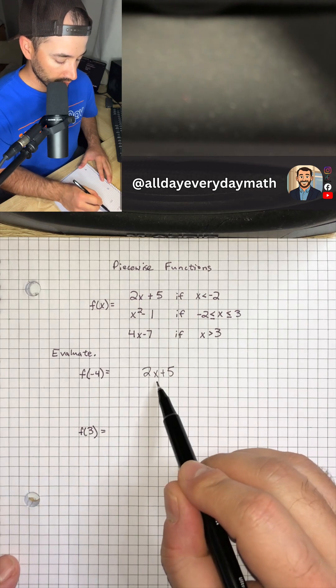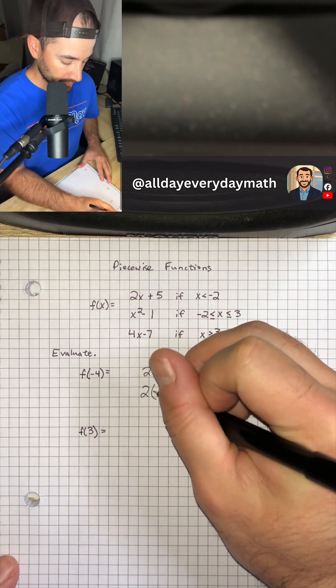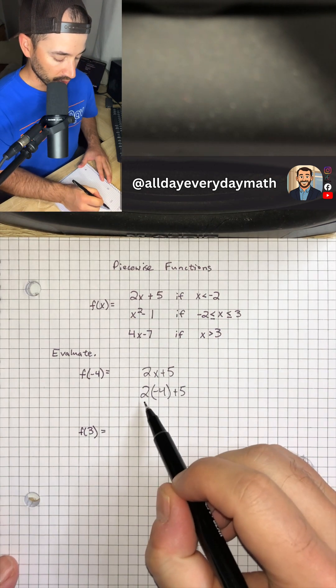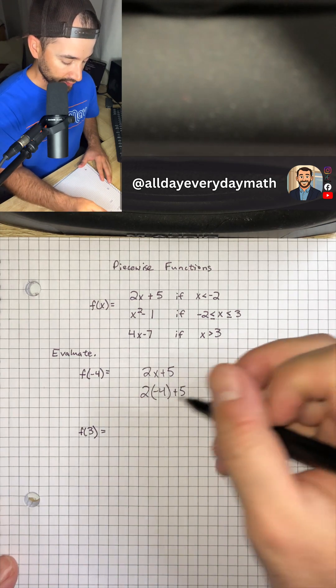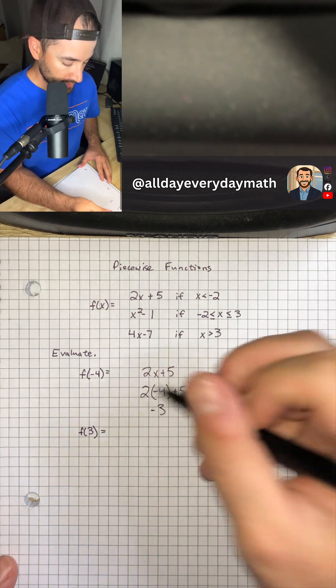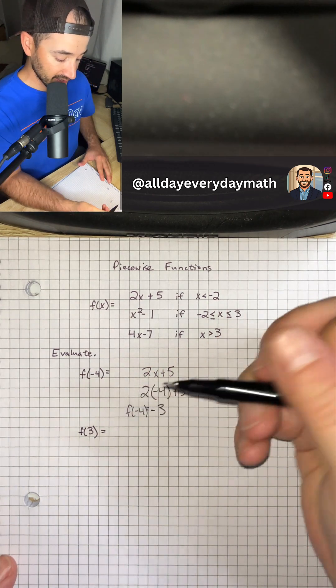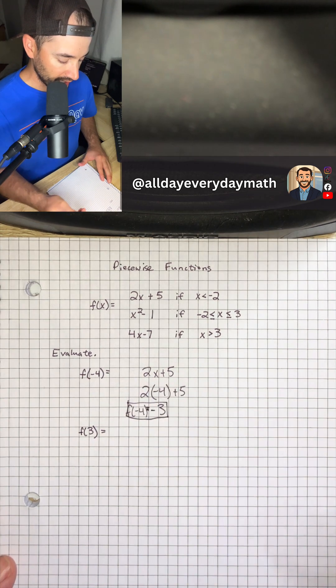And so when we do that, we'll have 2 times negative 4 plus 5. So 2 times negative 4 is negative 8, and then plus 5 is negative 3. And so that means that f of negative 4 is equal to negative 3. And that would be our answer.